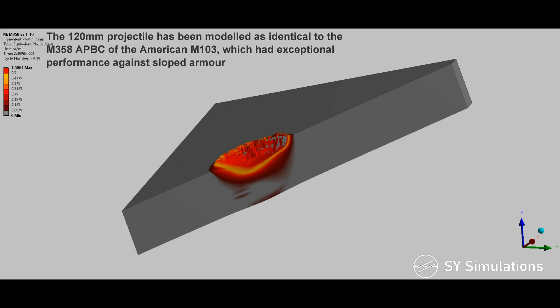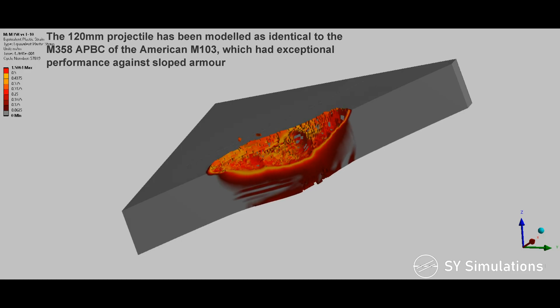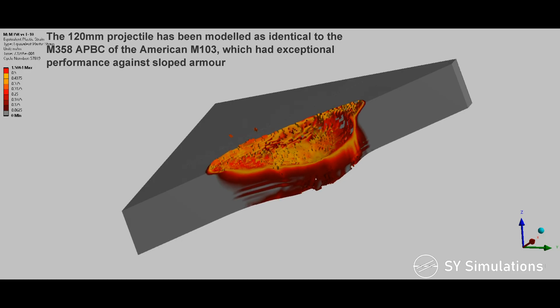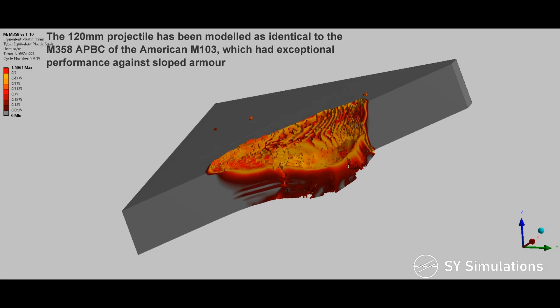The 120mm projectile has been modeled as identical to the M358 armor-piercing ballistic capped projectile of the American M103, which had exceptional performance against sloped armor.